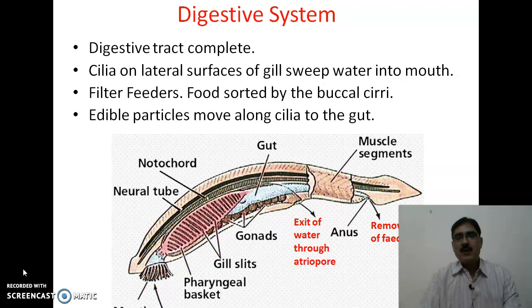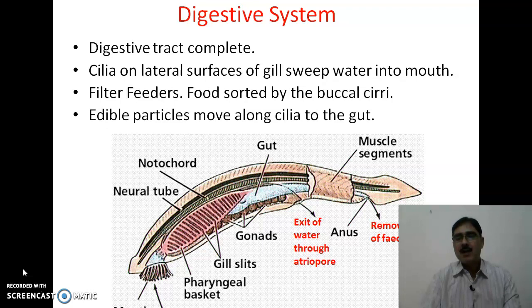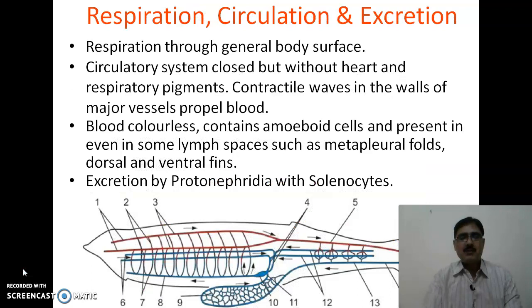The edible particles move inside the digestive tract due to movement of cilia. The undigested food material is then removed in the form of feces from the anus, while the water current moves to the atrial cavity and exits outside through the atriopore. Both of these pathways are indicated in red in the diagram.